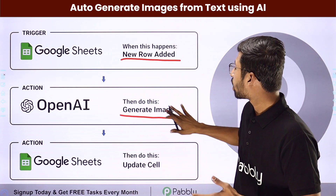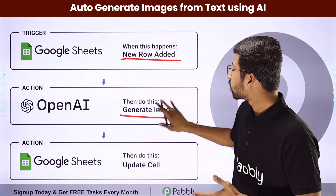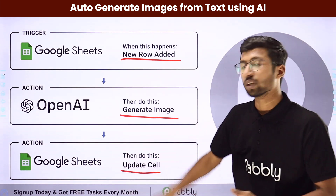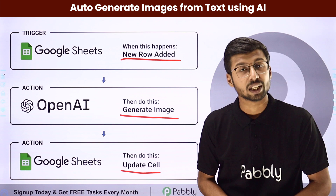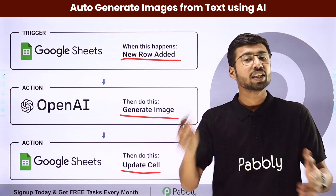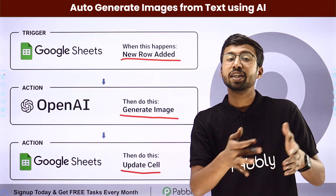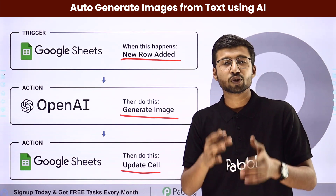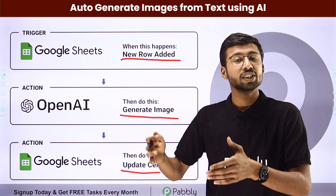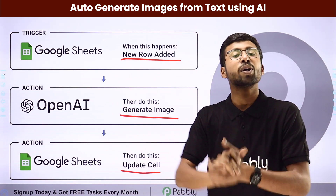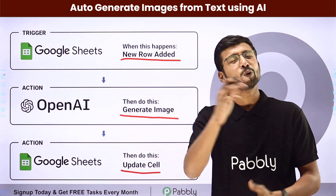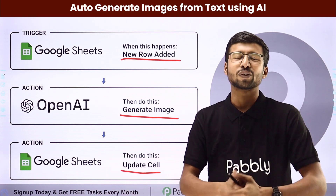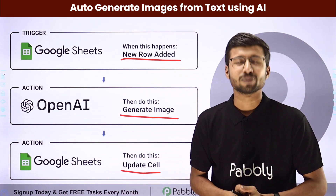We are also going to update the links and the URLs of the images into the same row in our Google Sheet as a new cell. Whatever kind of text you enter in your Google Sheet, on that basis, using artificial intelligence, we are going to generate new images. To know how you can set up this automation, come with me to my screen.